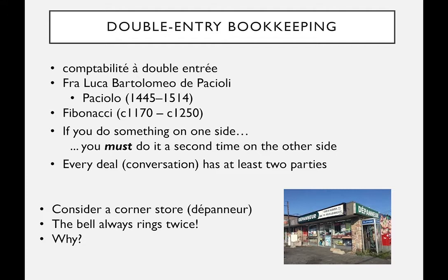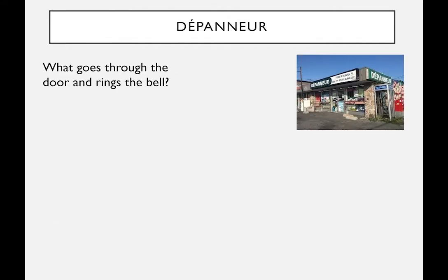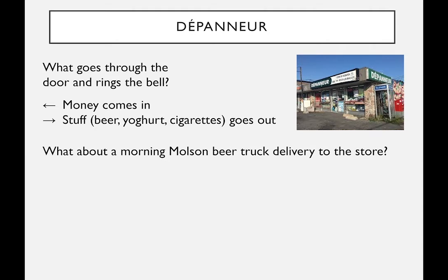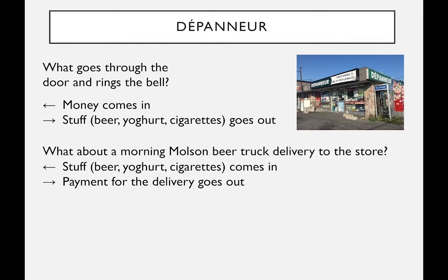Why does the bell always ring twice? People come in and people go out, but more importantly: money comes in and stuff goes out. When a transaction occurs, money comes in and goods — chocolate bars or whatever — go out. For delivery, the Molson beer truck shows up in the morning, beer comes in, and then payment goes out — an invoice or some kind of financial paper.